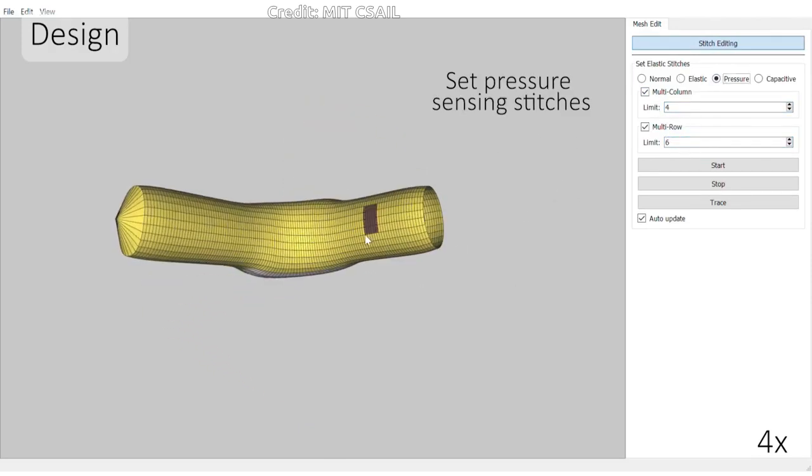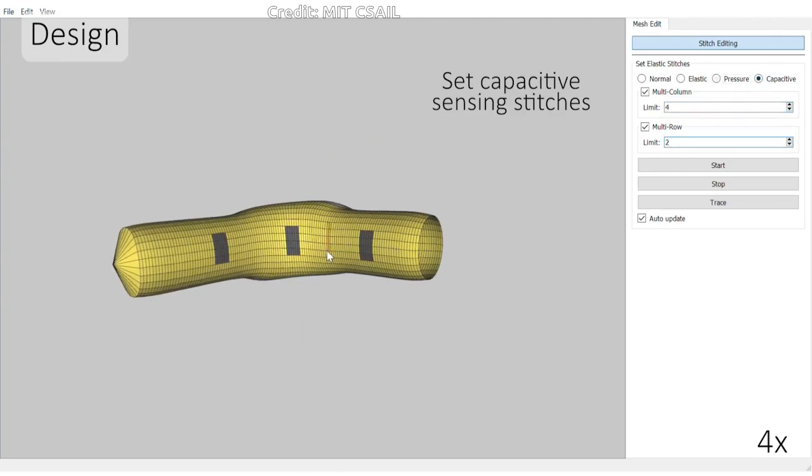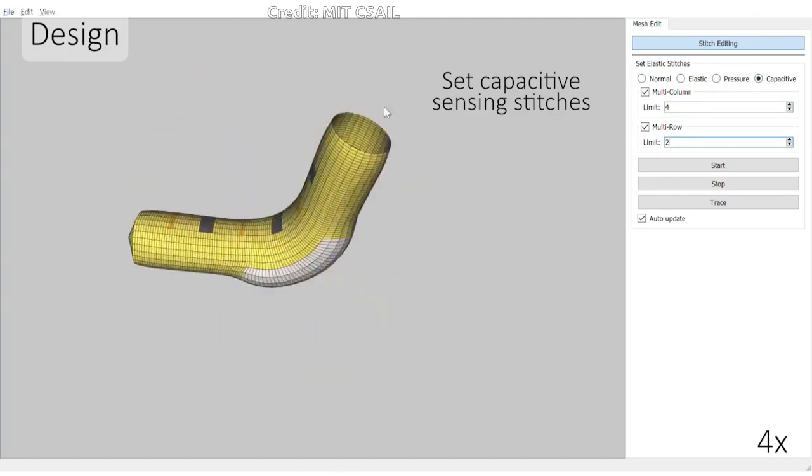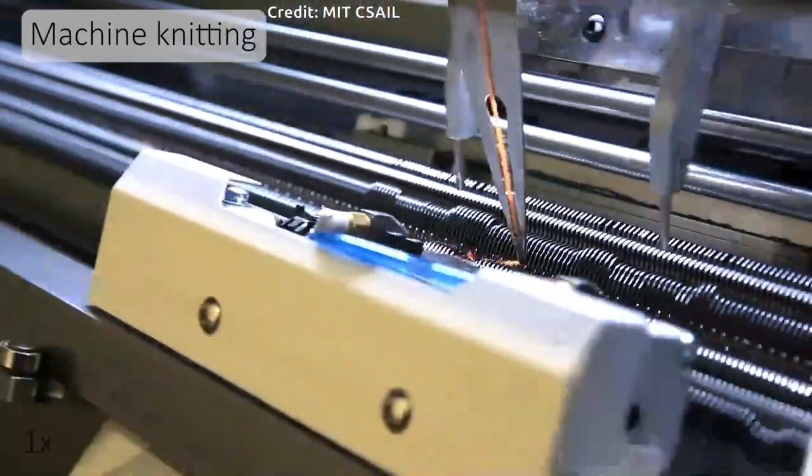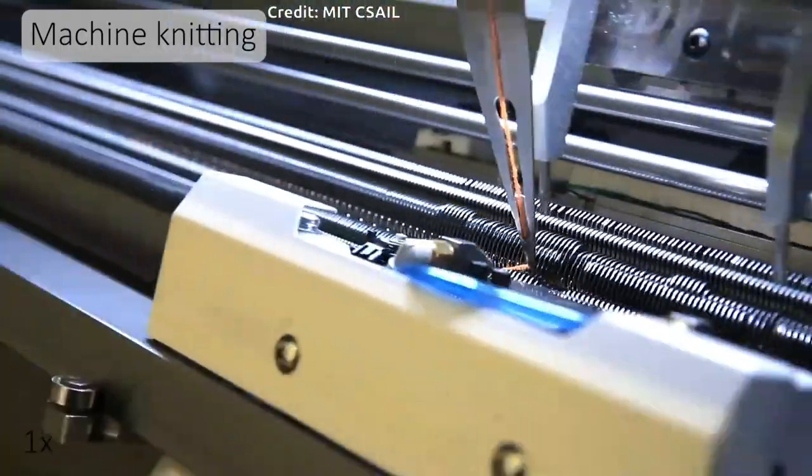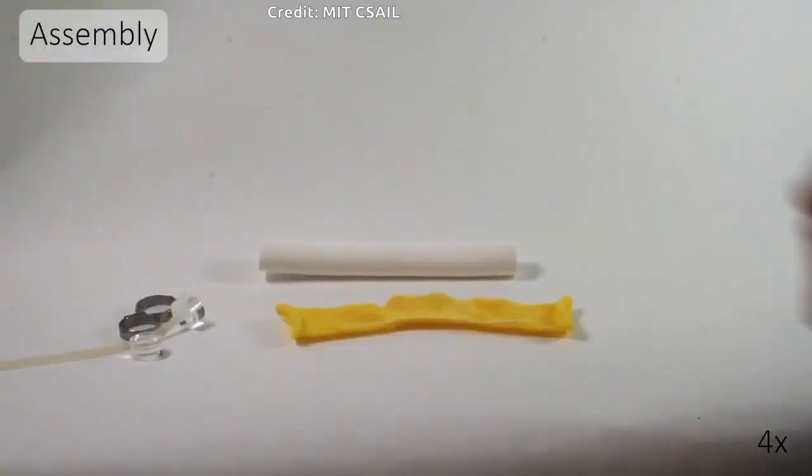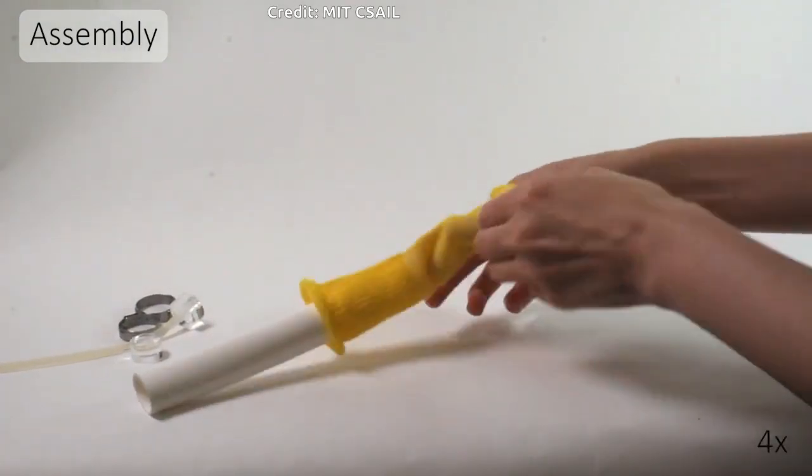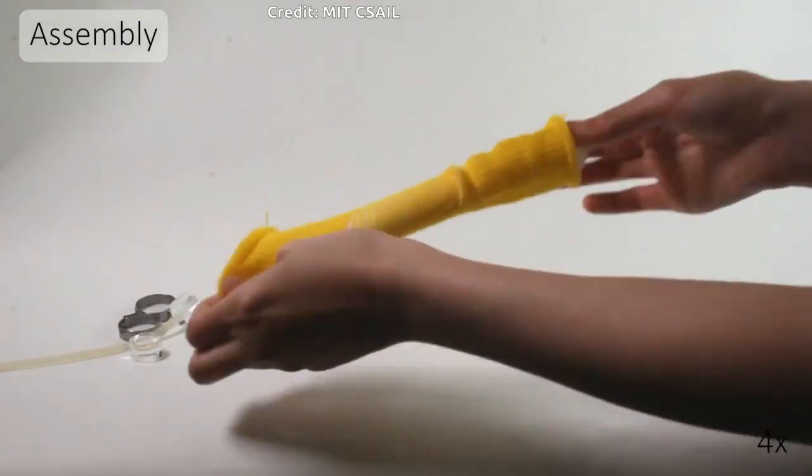The textile piece is fabricated by the knitting machine, which can be fixed to an inexpensive off-the-shelf rubber silicone tube to complete the actuator. The knitted actuator integrates conductive yarn for sensing, allowing the actuator to feel what they touch.